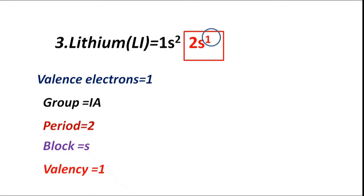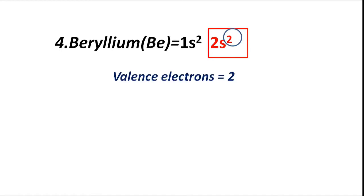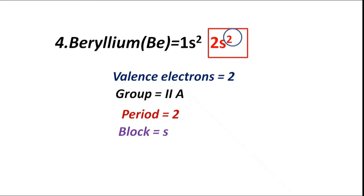Atomic number 4, beryllium (Be), has electronic configuration 1s2 2s2. The outermost shell is second (L). It has 2 valence electrons. Group IIA, period 2. Valence electrons fill the s sub-shell, hence block S. Valency is 2.